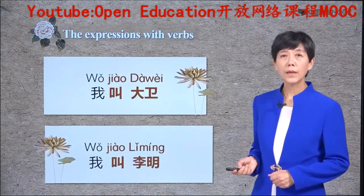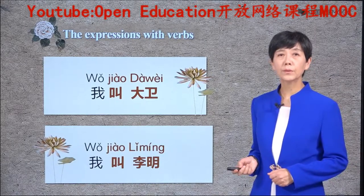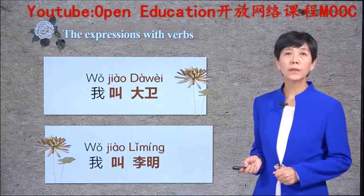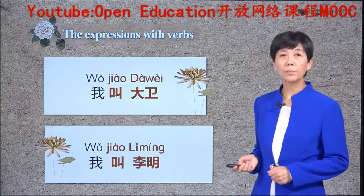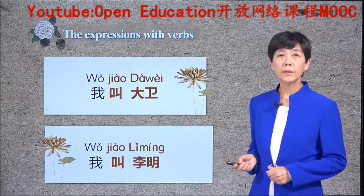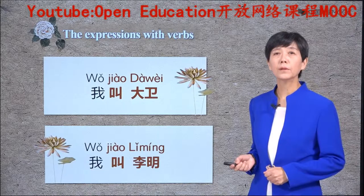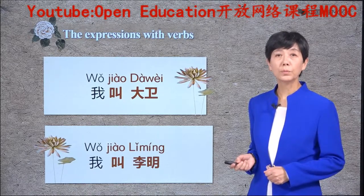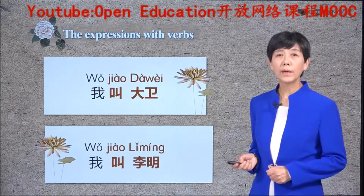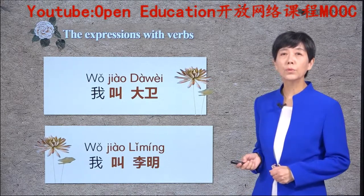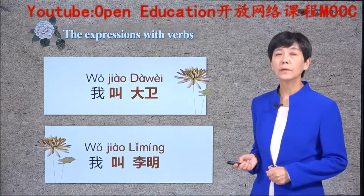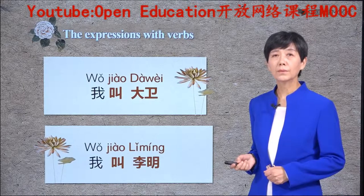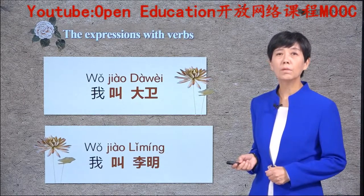Now let's take a look at another kind of expression which has a verb and object. We can again divide each sentence into two parts, but in this case we see something a little different from the 你好 group, because the predicate can be divided into two subdivisions. 叫 is a verb, and 大卫 and 李明 are nouns — and they are also the objects of the verb.